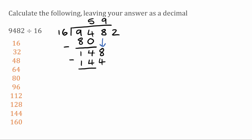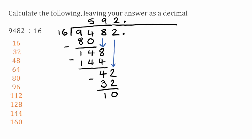Taking that away leaves us with 4. We bring down the next digit, a 2, giving us 42. How many times does 16 fit into 42? Twice, because 2 times 16 is 32. 42 take away 32 leaves 10. We've reached the end of our number with a remainder, so we put a decimal point after 9482 and after 592 in our answer, extend the line, and add some zeros.